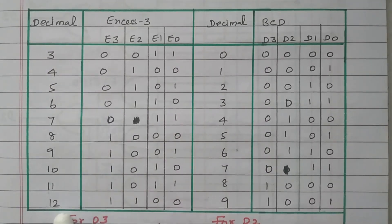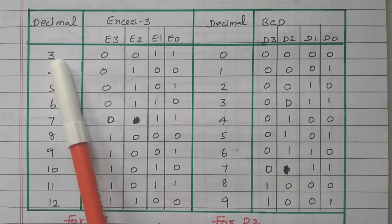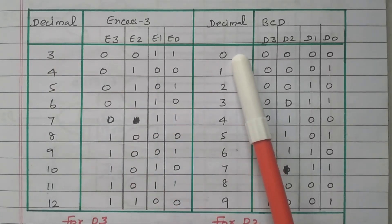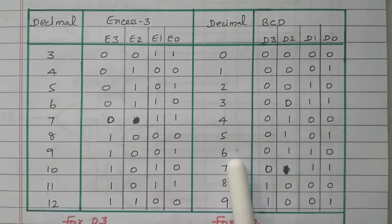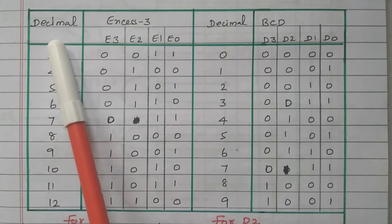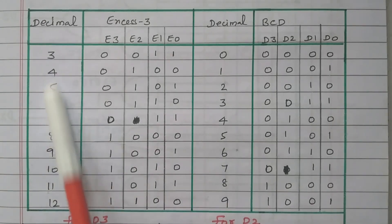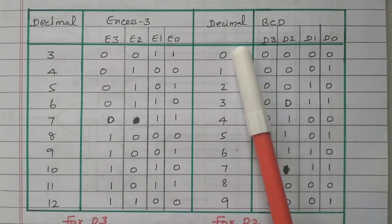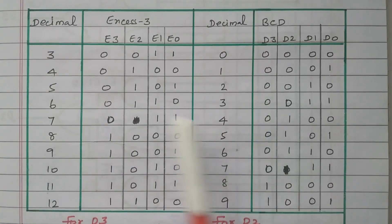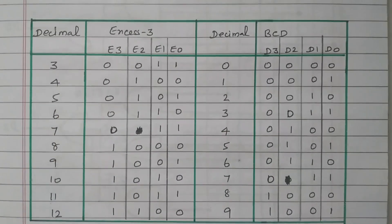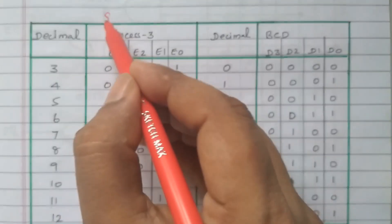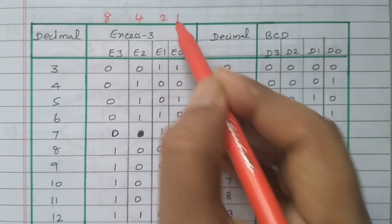The XS3 code runs from 3 to 12. From each digit, 3 is subtracted, giving us 0 to 9. So 12 minus 3 is 9, and 9 minus 3 is 6. This is the equivalent decimal of the XS3 code, and the decimal equivalent of a BCD code after subtracting 3. The BCD code uses 8, 4, 2, 1 weightage.